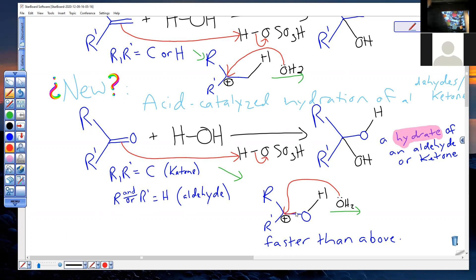And we're generating a species that looks like this. It doesn't have a cation on the carbon anymore. It has an oxonium. Same down here. Doesn't have a cation on the carbon anymore. It has an oxonium.